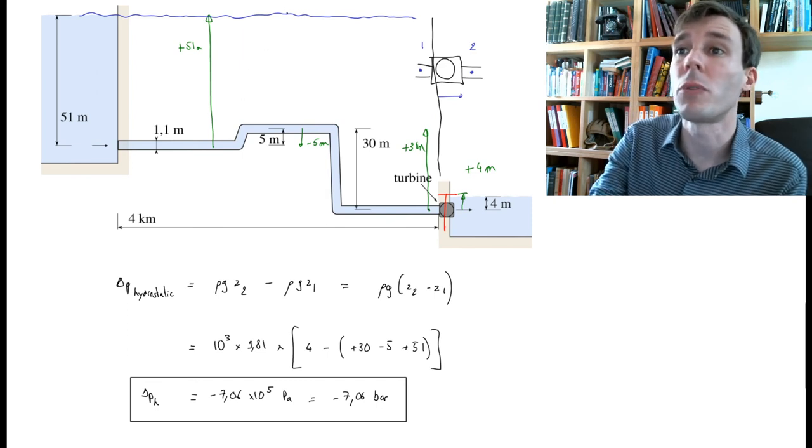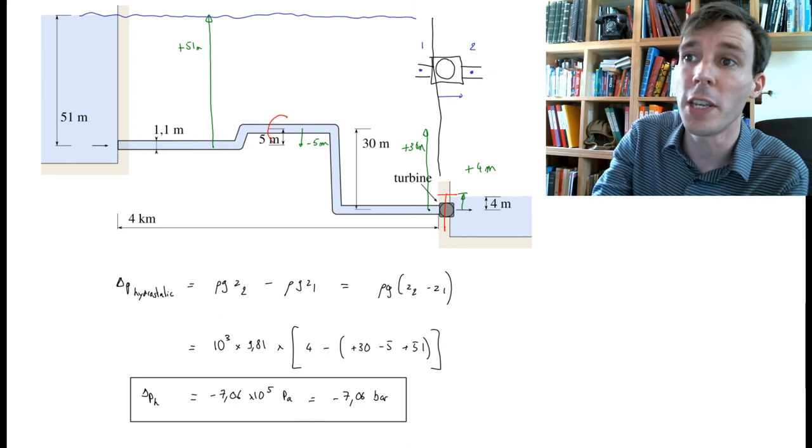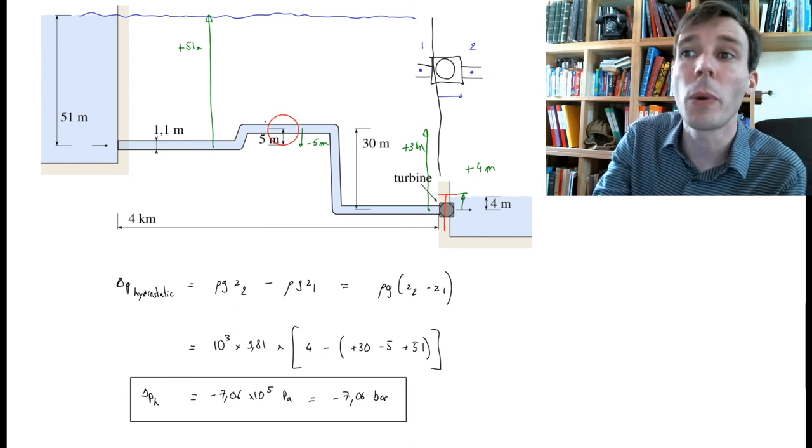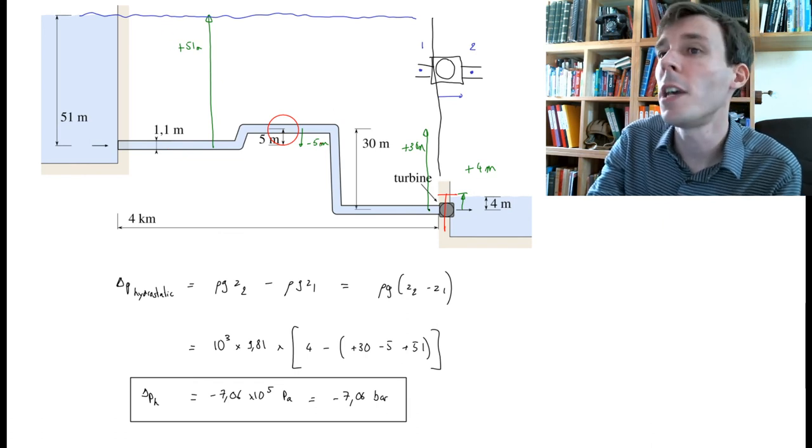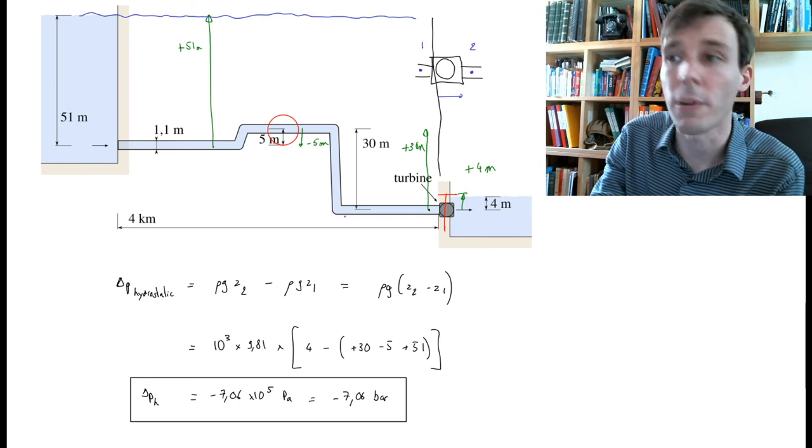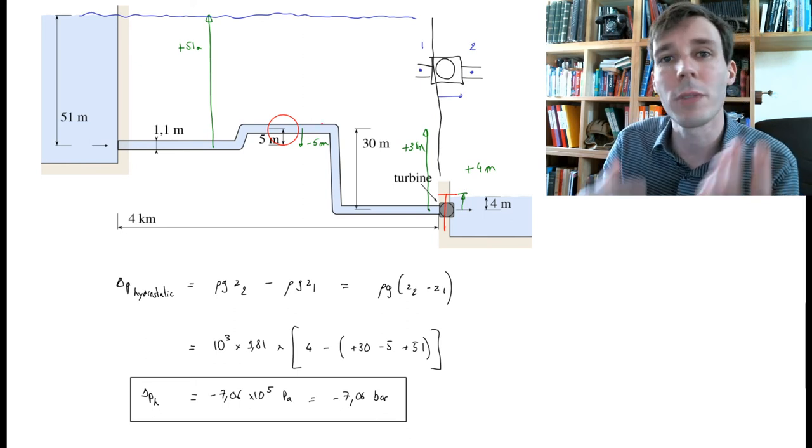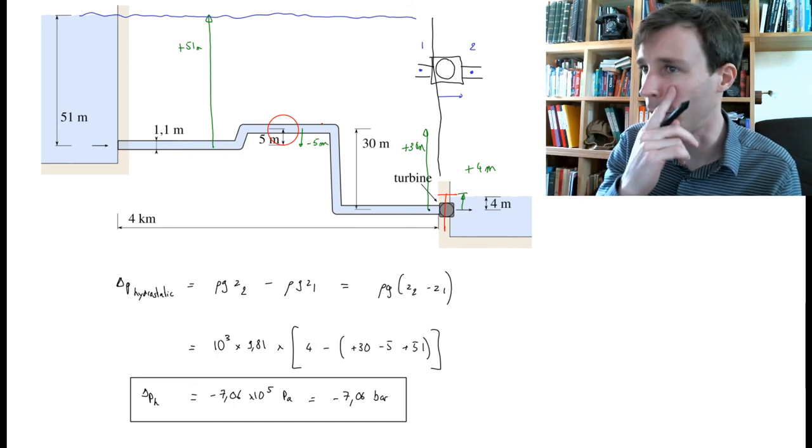If we had a pump positioned at a different point, maybe here in the middle, we would do the same. We would go minus 5 plus 51 on the left, and then minus 30 plus 4 on the right. So don't let yourself be too scared by this complex diagram.